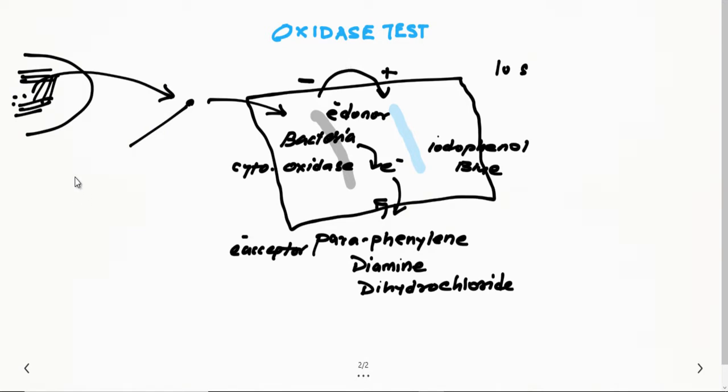If you have to remember the examples, please remember that all the Enterobacteriaceae group—that includes E. coli, Klebsiella, Proteus, Providentia, and Morganella—they are all oxidase negative.